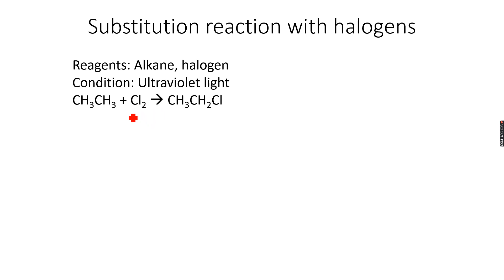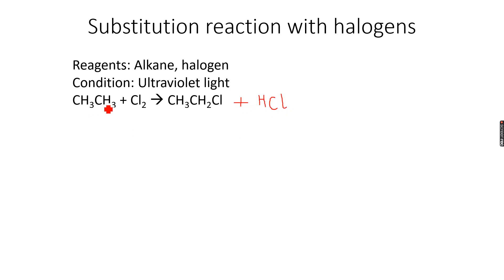In substitution reactions, you remove a hydrogen atom and replace it with another desired atom — in this case, chlorine. In this equation, I forgot to write plus HCl, because the hydrogen is being released from here and a chlorine is being released from here, so both of them combine to form hydrogen chloride.